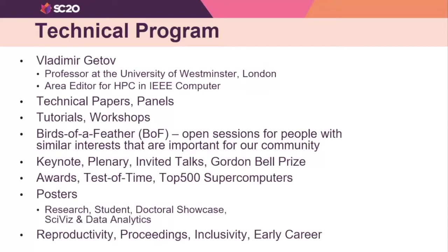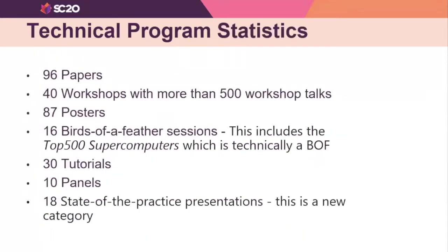When the new ranking is published, there are a number of posters. In recent years, supercomputing has placed a lot of interest in reproducibility, inclusivity, and early career. This year the technical program includes 96 papers, 40 workshops with more than 500 workshop talks, 87 posters, 16 birds of a feather sessions, above 30 tutorials, 10 panels, and 18 state of the practice presentations, which is a new category.